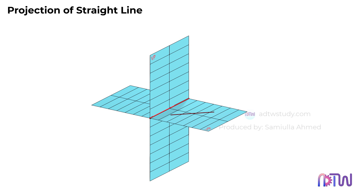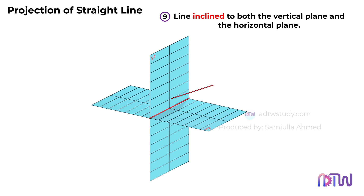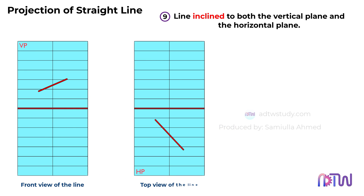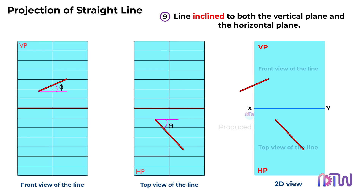Moving on to the final position — Position 9: the line can be inclined to both the vertical plane and the horizontal plane. This is a very important case, as most questions are based on this position. In the 3D view, the line is inclined to both VP and HP. What makes this case special is that when we see the line from both the front and top views, in both perspectives the length appears shorter than the actual length. From the front view, the line is at an angle with the horizontal plane; when viewed from the top, it appears at an angle with the vertical plane. In the 2D view, we are not obtaining the actual length of the line in either view.